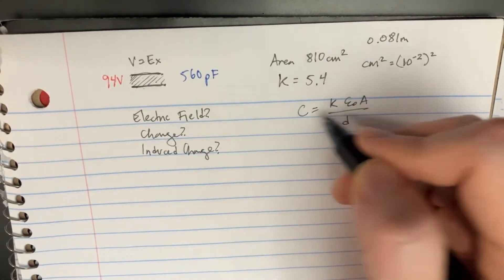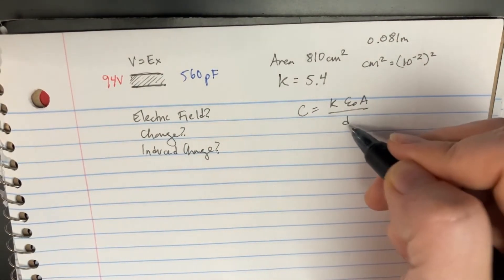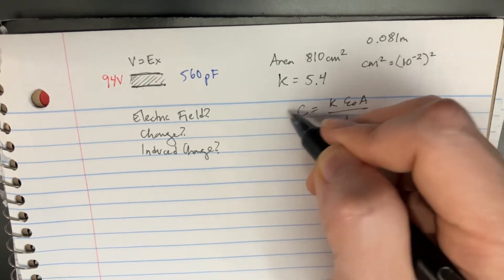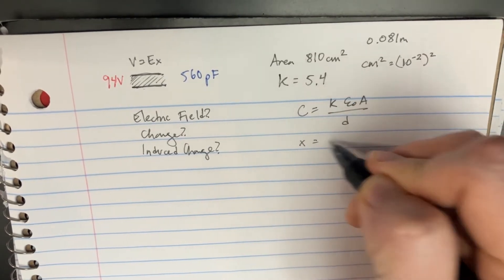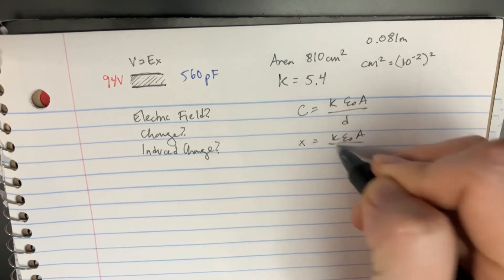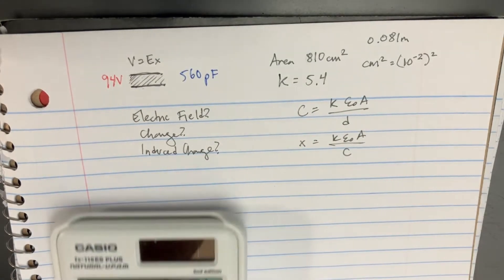We're trying to solve for this distance. Let's swap it, so x equals K epsilon naught A over C. Now we can solve for that.